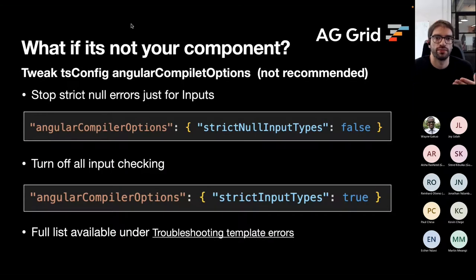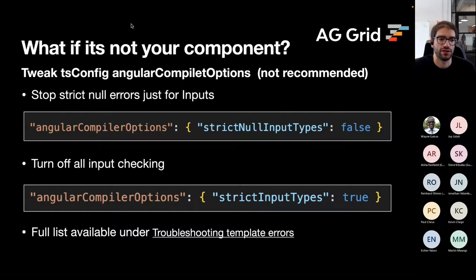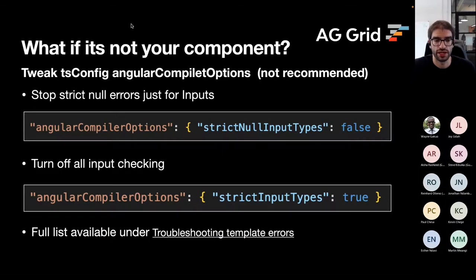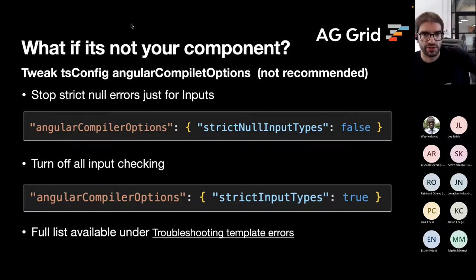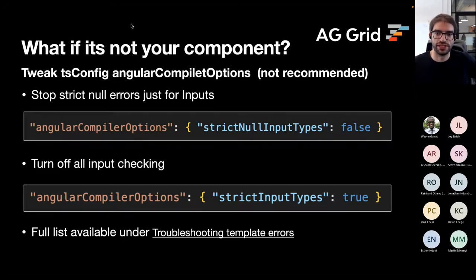If you find that a whole suite of components from a library doesn't handle nulls well, you can look at your Angular compiler options in the tsconfig file. You can turn off null input types for the whole application, or even disable strict input types entirely — but if possible, don't disable these features because they're there to help us write clean and accurate code. There's a link in the slides to the Angular docs covering all the different tsconfig properties you can set.